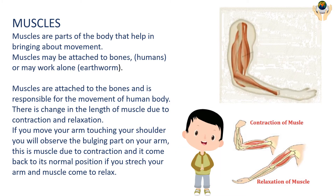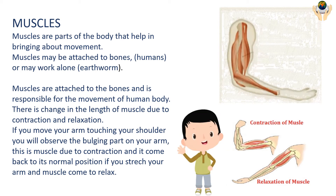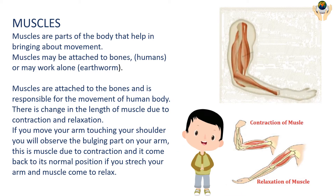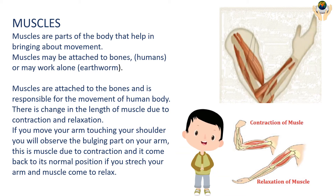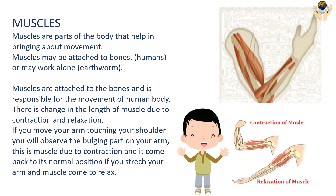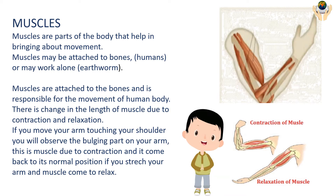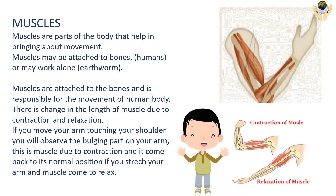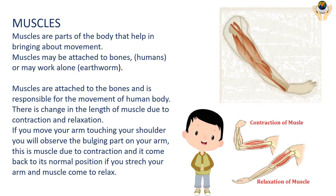Muscles are part of the body that help bring about movement. Muscles may be attached to bones or may work alone. Muscles attached to bones are responsible for the movement of the human body. There is a change in the length of the muscle due to contraction and relaxation. If you move your arm touching your shoulder, you will observe a bulging part on your arm — this is due to muscle contraction. When you stretch your arms, the muscle returns to its normal relaxed position.